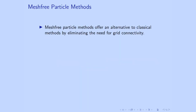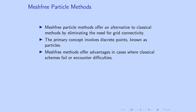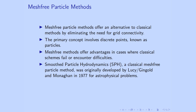Particle methods can therefore be an alternative to all classical methods, eliminating the need for grid connectivity. The primary concept involves discrete points. Instead of regular ordered points, we have discrete points that can be irregular — they do not need to be ordered or connected. These are known as particles. This approach has the advantage that where classical methods fail or become difficult, the particle method can handle those difficulties more easily.